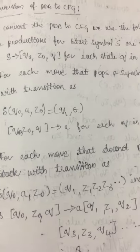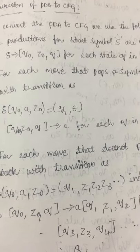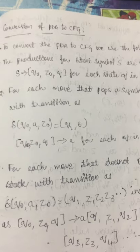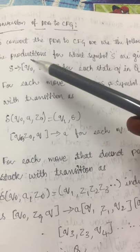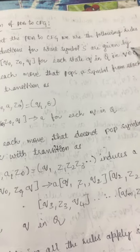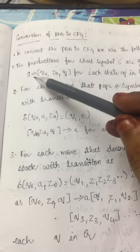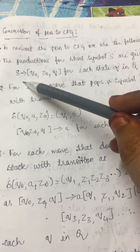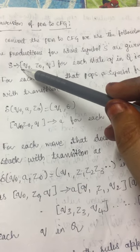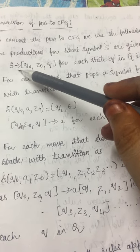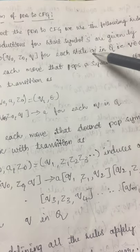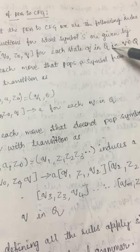In order to convert, the input will be a PDA and the output will be a CFG. The first step is: the productions for the start symbol S are given by writing them in this manner — S produces Q₀ Z₀ Q for each state Q in capital Q.